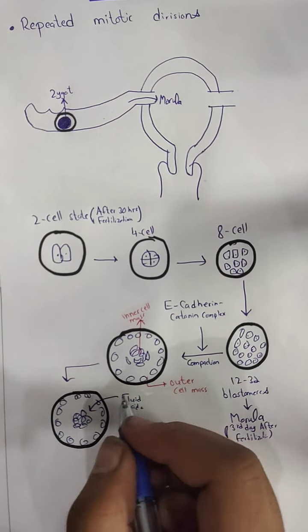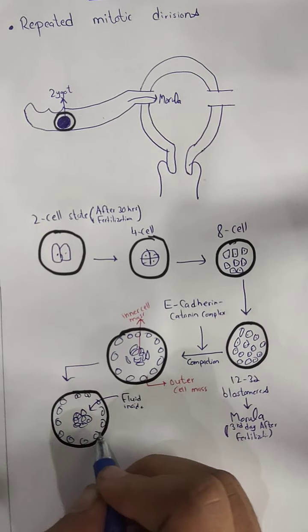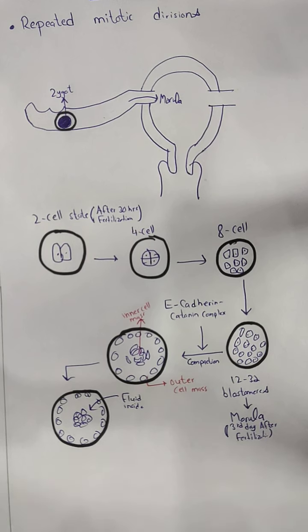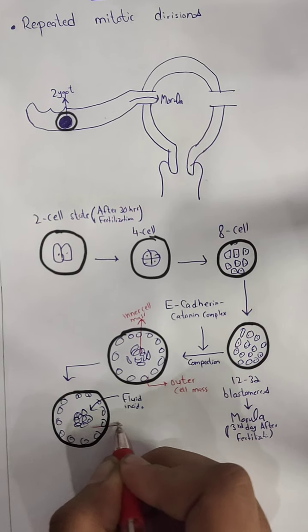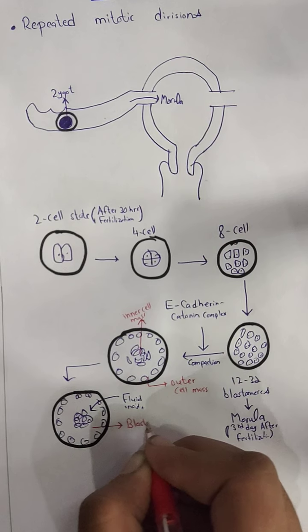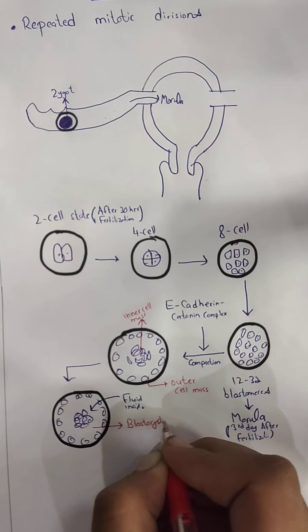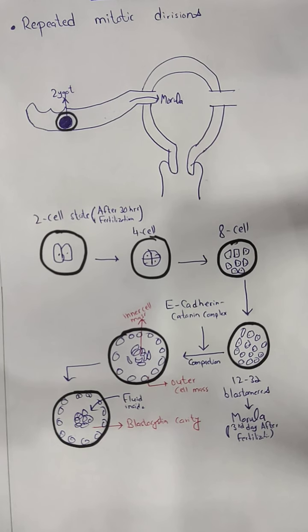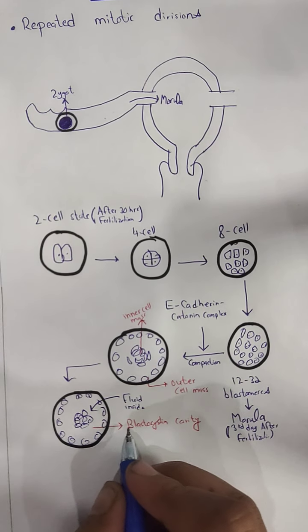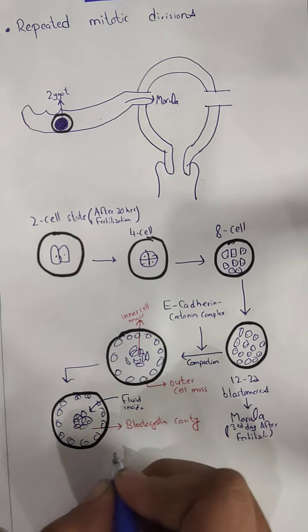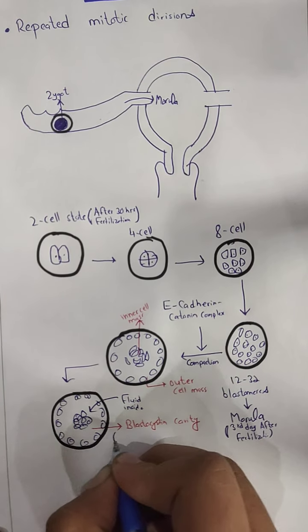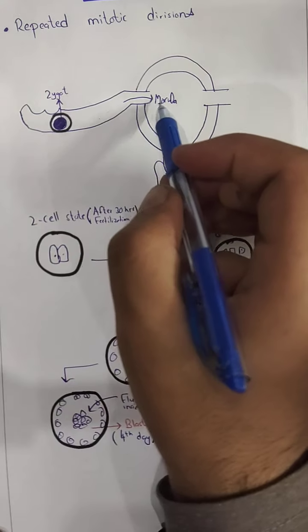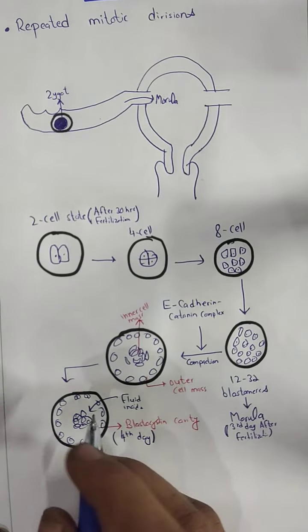The fluid moves inside the cavity forming a space. This is the blastocystic cavity — this cavity is called the blastocystic cavity. This blastocystic cavity appears approximately on the 4th day after fertilization. On the third day the Morula enters the uterus, and then the blastocystic cavity appears.